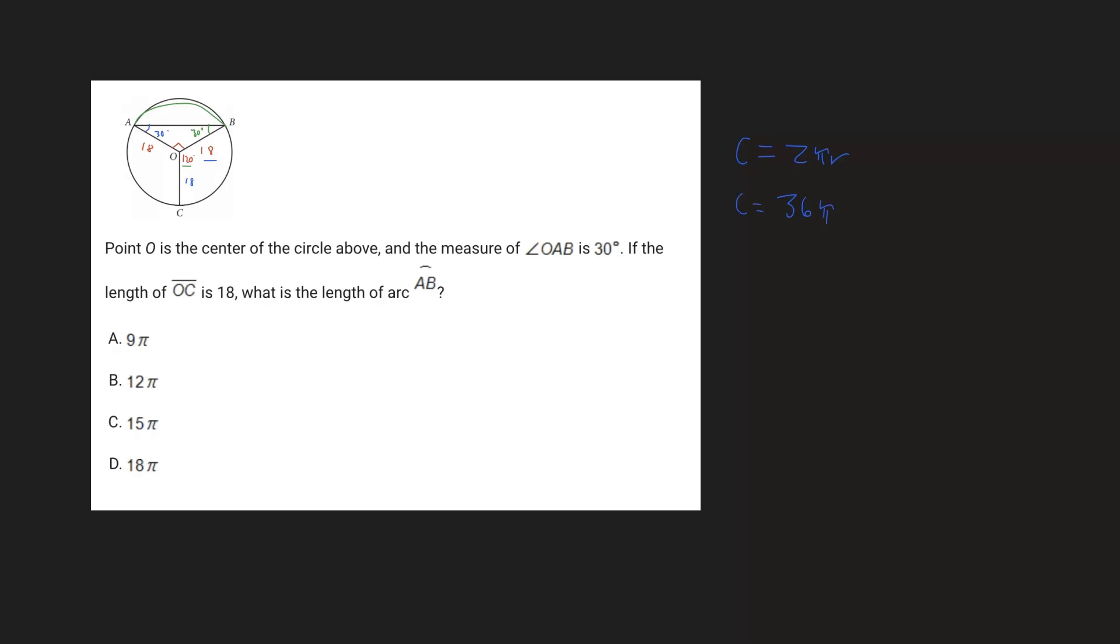And so in order to calculate the length of the arc, what we can just do is first just find the ratio to scale it up. So we have 120 degrees over 360. So that in reality is just one-third. So what we want to do is just take one-third of that circumference, which we know is 36π.